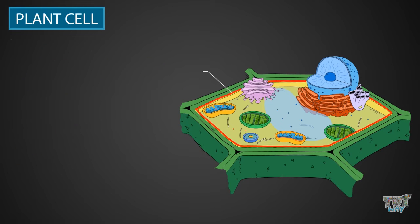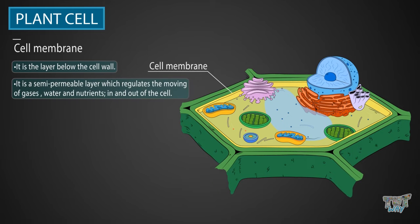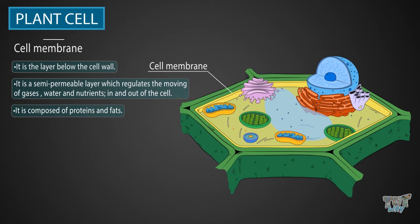Next is the cell membrane. It is the layer below the cell wall. It is a semi-permeable layer which regulates the movement of gases, water, and nutrients in and out of the cell. It is composed of proteins and fats.